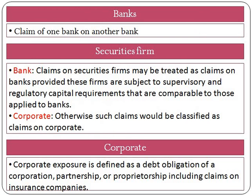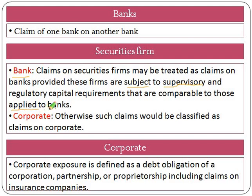Moving on to the fourth asset class: claim on bank, which means the claim of one bank on another bank — like SBI having a claim on HDFC or any other bank. The fifth asset class is claim on security firm. Similar to public sector entities, a claim on a security firm can be classified as bank or corporate depending upon certain conditions. A claim on a security firm may be treated as a claim on bank provided these firms are subject to supervisory and regulatory capital requirements comparable to those applied to banks. If these conditions are not satisfied, then such a security firm will be classified as corporate.